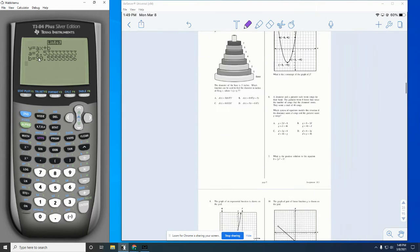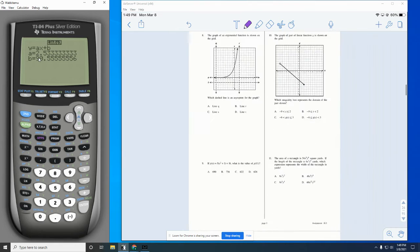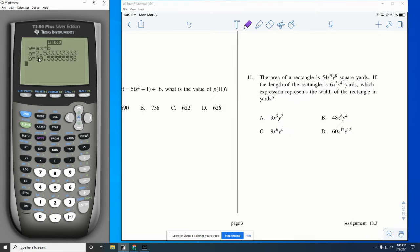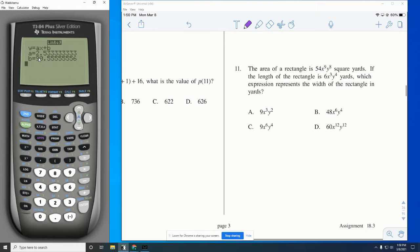Next, we're going to look at problem 11. So I'm going to scroll a couple pages. So for number 11, the length of a rectangle is 54x^9y^8 square yards. If the length is 6x^3y^4 yards, which expression represents the width? So we've talked about this before, but it's been a while. Remember, if they give you area, you're going to need to divide. So I'm going to take the big number and put it on top, and divide it by the little number.